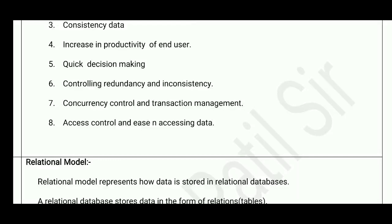Concurrency control means synchronization or parallelization of operations. Transaction management — for example, Amazon manages all types of transactions using its own database. Whenever you log in, it shows your last details — what orders you have purchased or what browsing you have done on that particular site. All this is possible because of the database.